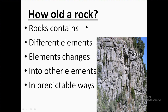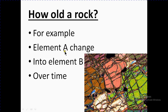How old is a rock? Rocks contain different elements, and elements change into other elements in a predictable way. If we know the elements and their rate of change — how an element converts from one to another — we can easily measure the age of the rock. You can see different types of colors in a rock sample, meaning the elements are different or they have converted from one element to another over time.